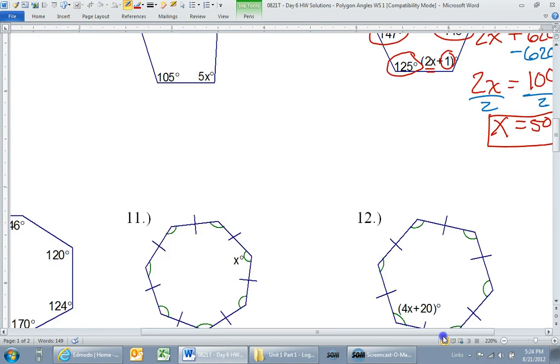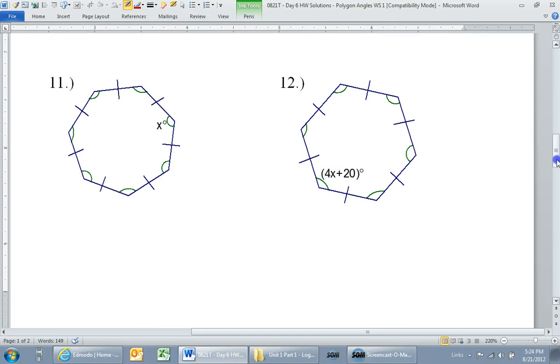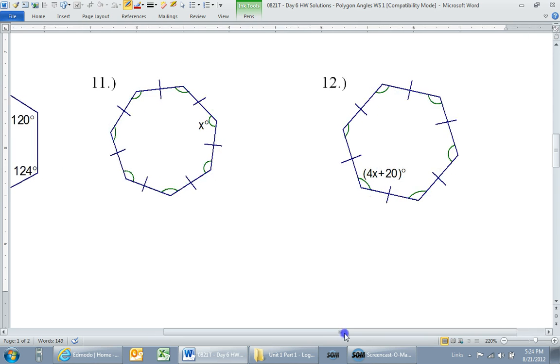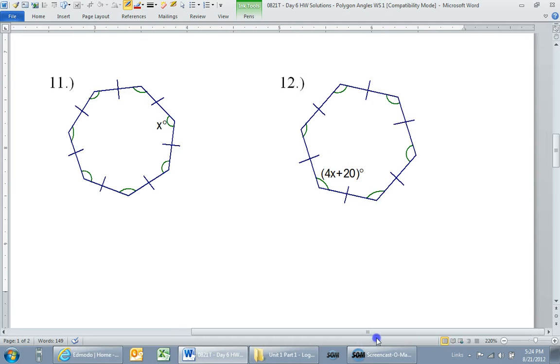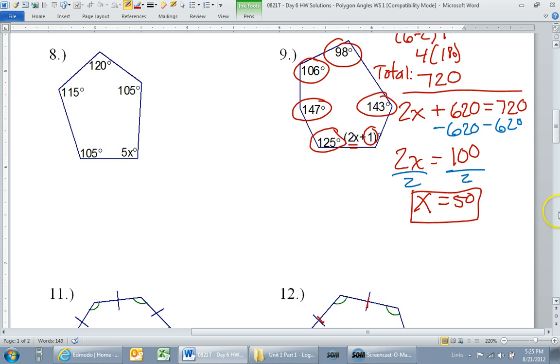Let's see. I'm going to go ahead and do number 12. And if I do number 12, you should be able to do number 11, because it's basically the same thing. Let's see, what kind of a shape do I have here? I've got 1, 2, 3, 4, 5, 6 sides. Oh look, another hexagon. Well, that will be helpful, because I know the total will be 720 again.